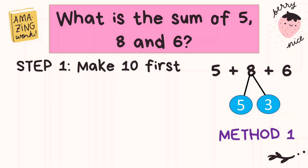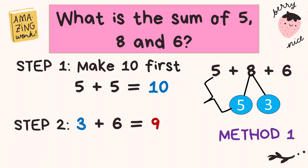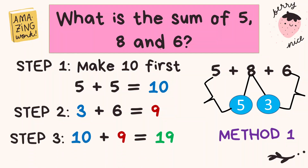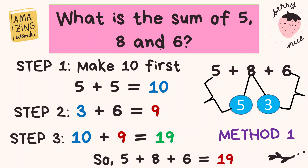Which numbers are we going to combine to make ten? Yes, it's five and five. Five and five is equal to ten. Then we will combine three and six, which is equal to nine. The third step is to combine the total of step one and step two: ten plus nine is nineteen. So the total of five, eight, and six is nineteen.